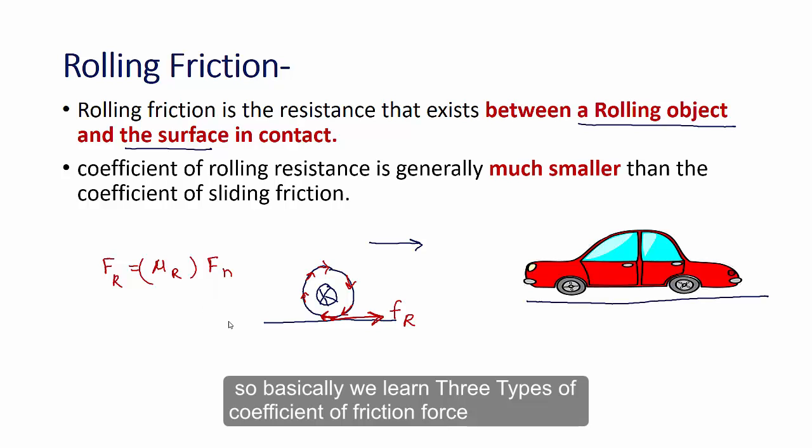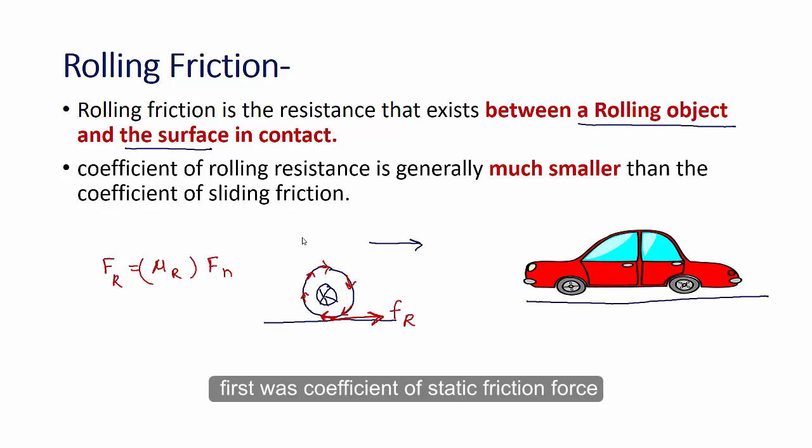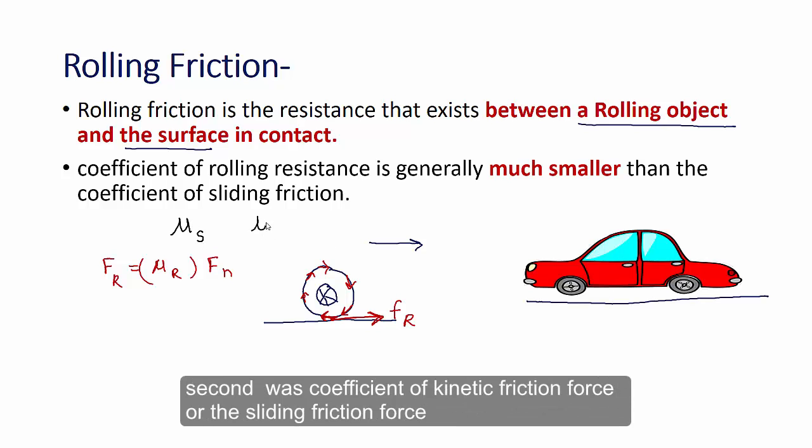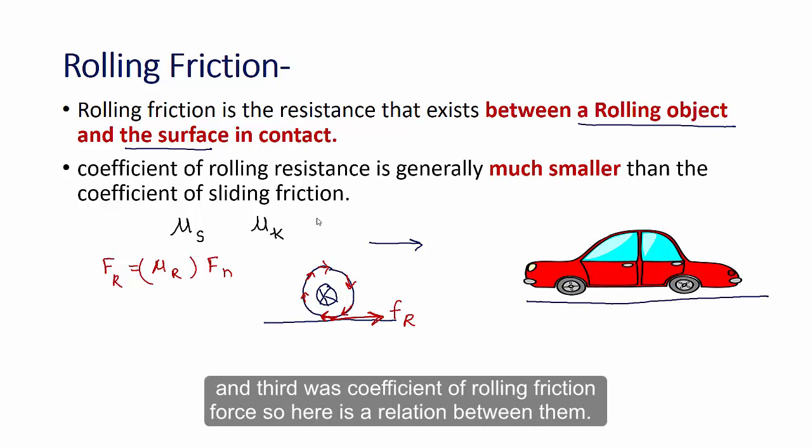So basically we learnt three types of coefficient of friction force. First was coefficient of static friction force. The second was coefficient of kinetic friction force or the sliding friction force. And third was coefficient of rolling friction force. So here is the relation between them.